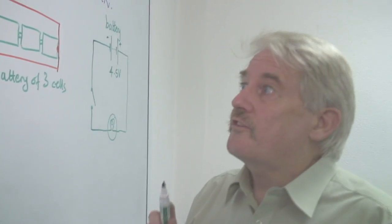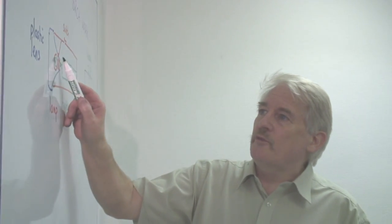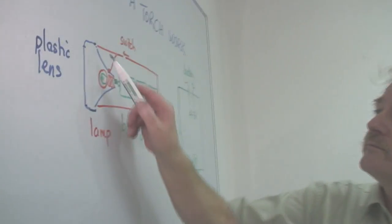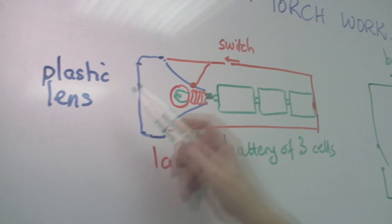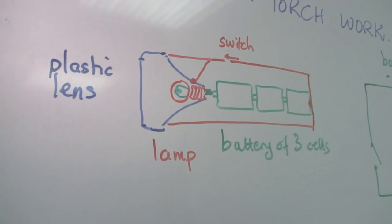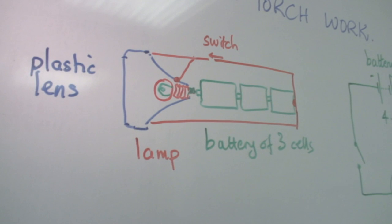The additional thing that we find is next to the bulb there is a reflecting part, a reflector here to reflect the light this way. And at the front, a plastic lens. This completes the torch.